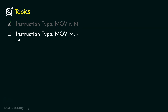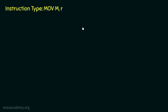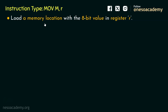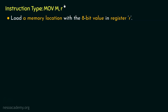Let's now focus on the next instruction type, MOV M,R. From the type of the instruction itself, I believe you have already figured out what it does. Basically, we are supposed to load a memory location with the 8-bit value present within register R. So far in all the instructions we have been seeing, whatever comes after the comma is the source and anything before the comma is the destination. Now let me illustrate how this type is going to work.